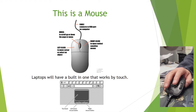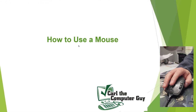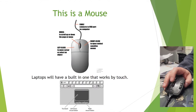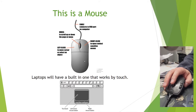You've also got the wheel in the middle. The wheel goes up and down — it scrolls up and down the page. You just roll it with your finger. Some mice have a button built into the wheel, so if you press on it, it will create a scroll box for you. And that covers the buttons of a mouse.